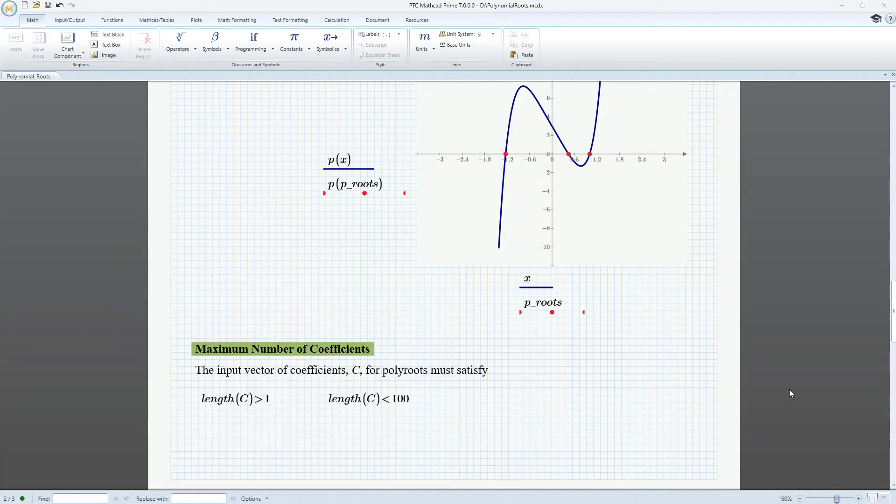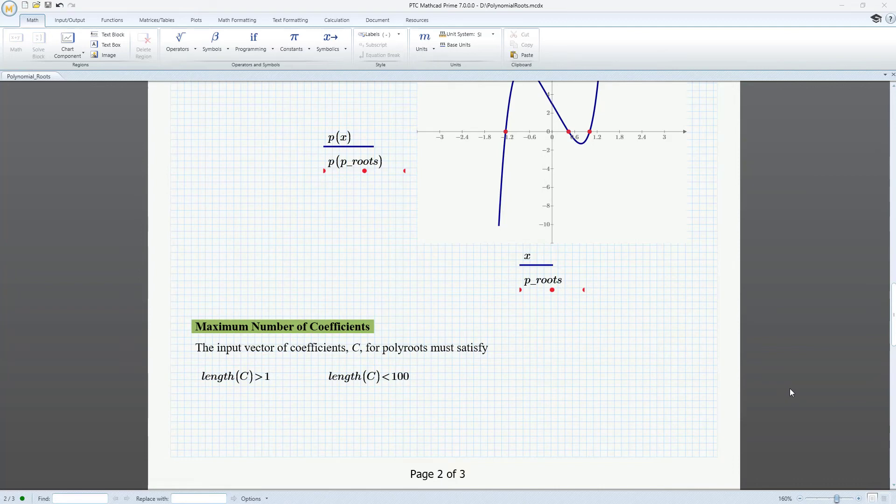Polyroots accepts vectors of up to 99 coefficients. For polynomials of higher degrees, try factoring the polynomials symbolically to find the lower degree factors.